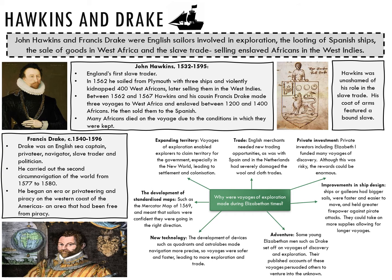New technology, such as the development of devices like quadrants and astrolabes, made navigation more precise, so voyages were safer and faster, leading to more exploration and trade. Also, the development of standardised maps, such as the Mercator map of 1569, meant sailors and traders could be confident they were going in the right direction. This reduced the risks of exploration and encouraged further voyages.